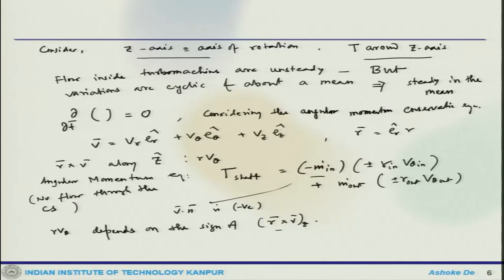Let us continue the discussion on turbomachinery. What we are looking at is the equation of the torque. We have looked at the general equation of turbomachinery, and what it needs is that in addition to mass conservation, momentum conservation, and energy conservation, you need one more equation which is the conservation of angular momentum. We are looking at how to derive that and simplifying for the turbomachine system, considering that the rotation is about the z-axis, and you get the torque equation like this.